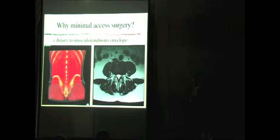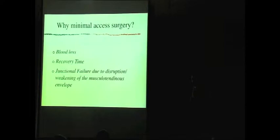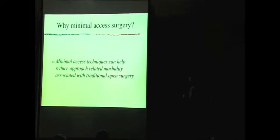We're trying techniques that aren't so invasive. These techniques are an attempt to reduce blood loss during surgery, improve recovery time so that people are up and around faster, and reduce failure above and below where we're operating — what we call junctional failure, which is the junction between the normal spine and the fused or operated-on spine. Minimal access techniques can help us reduce what we call approach-related morbidity — the problem of the rest of the body around the spine being injured by the operation we need to do to help the patient.